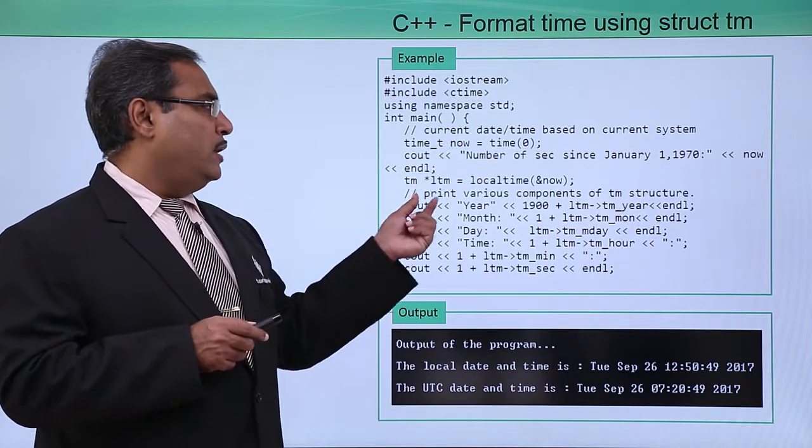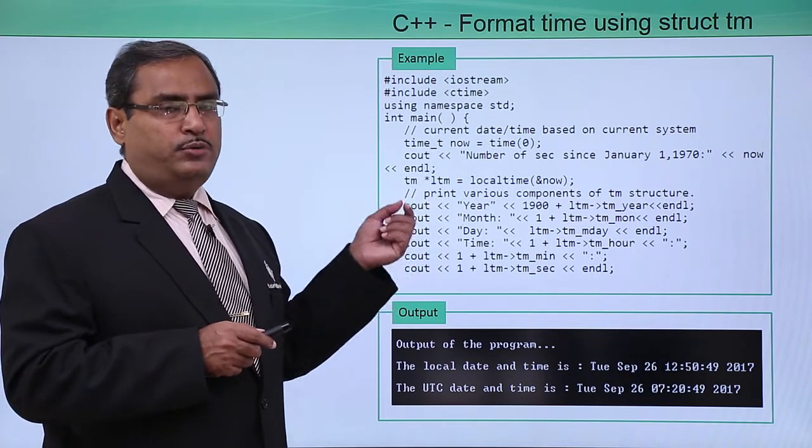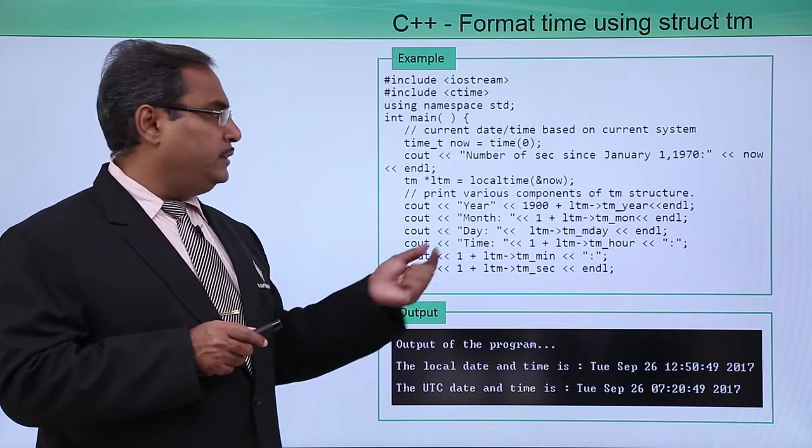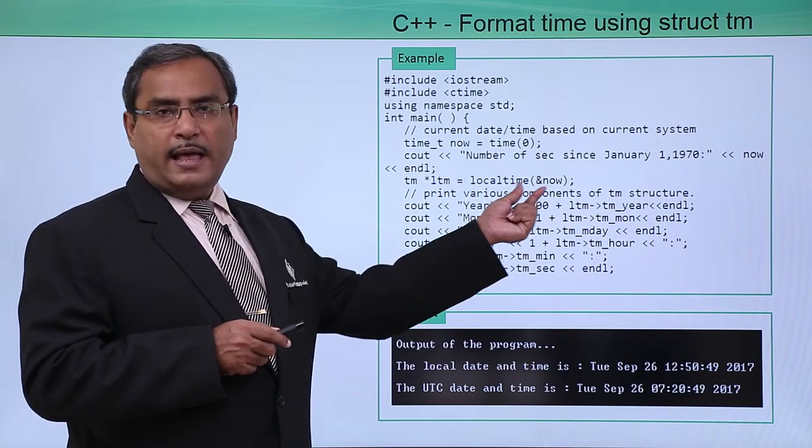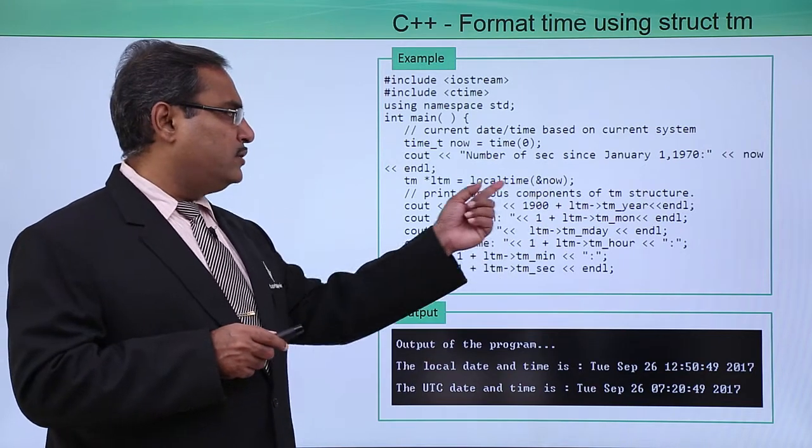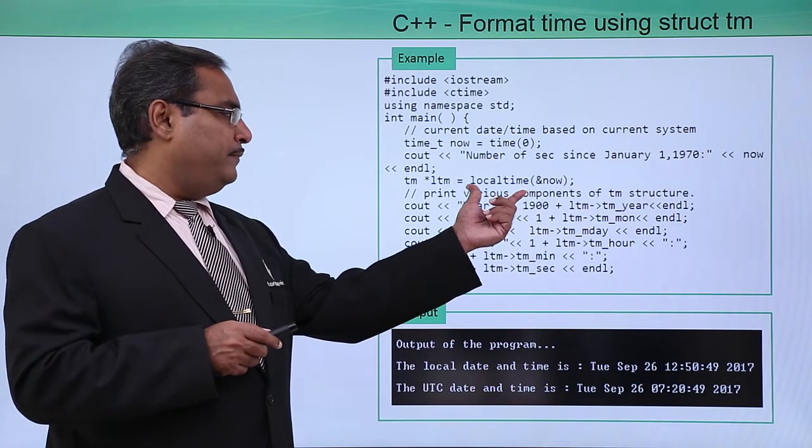Then we have a TM pointer LTM. We are making a pointer-type structure variable LTM which is getting initialized with localtime(&now). This 'now' variable gets passed as reference to localtime.